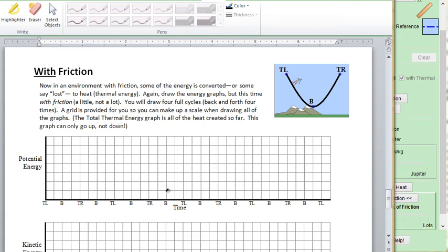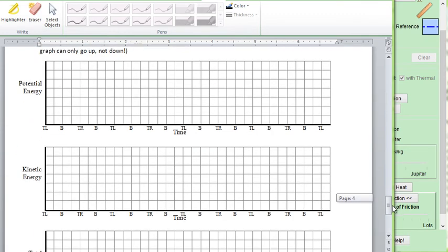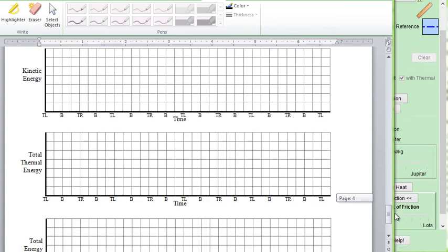So going back to our handout for the lab, on the last page, we are doing it with friction. So the graphs are going to look similar. But as you can see from the simulation, the potential energy will be decreasing over time. The maximum potential energy will decrease over time as he goes less and less high. And his maximum kinetic energy will be decreasing over time.